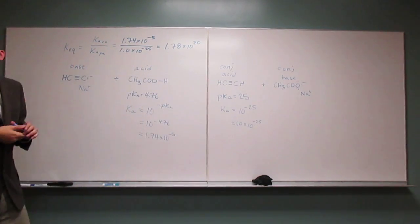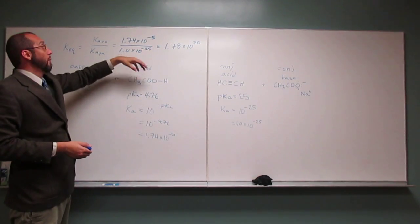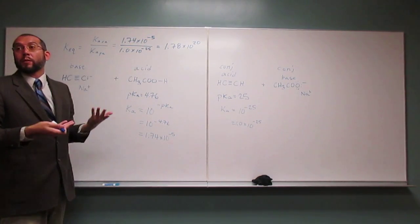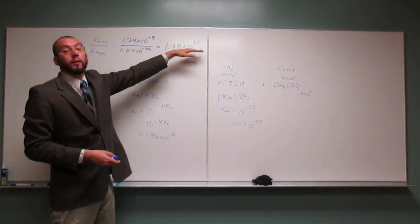And that would be something you would expect, right? Because when you take this 5 that's on the bottom, 25 on the bottom, bring that up, then it becomes a positive 25. You add 5, negative 5 plus positive 25, you get 20.